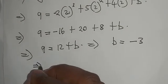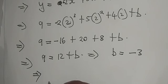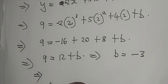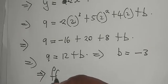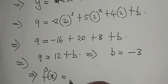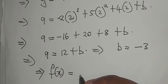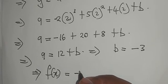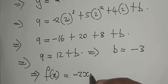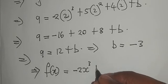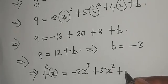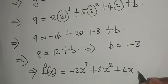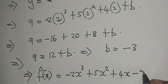Therefore, it implies that here, the equation now becomes f(x) = -2x³ + 5x² + 4x - 3.